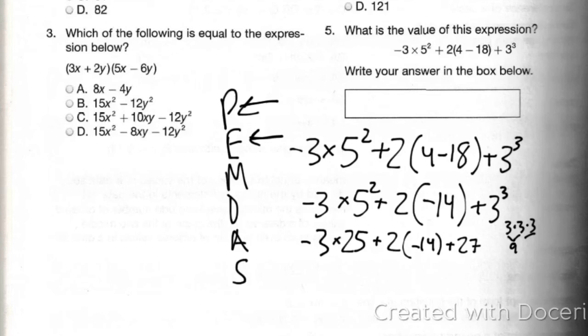So now I'm going to work with multiplication and division, but there's no division here, so just straight up multiplication. Negative 3 times 25 is going to give me a negative 75. Then I have 2 times negative 14. 2 times negative 14 is going to give me a negative 28. Then I also bring down my plus 27. So multiplication and division are handled.